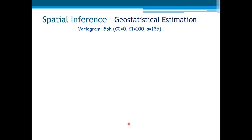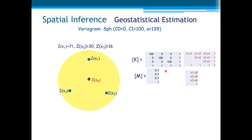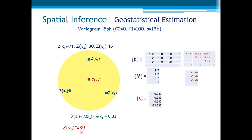Now, let us increase the range of the variogram. The same sample positions regarding the point to be estimated, but with a larger range. We can see the matrix — the only difference is in the covariance between the sample values and the point to be estimated. The weights remain the same, and this is the resulting estimator, which is precisely the same as the previous case. But the estimation variance is decreased, which means this is a more confident estimator with lower variance of the error.